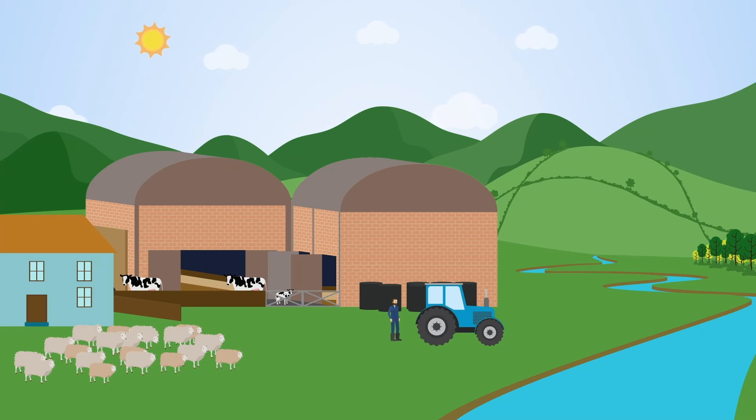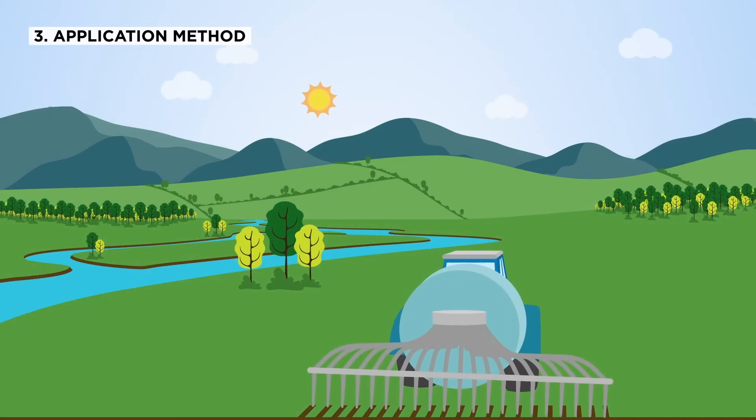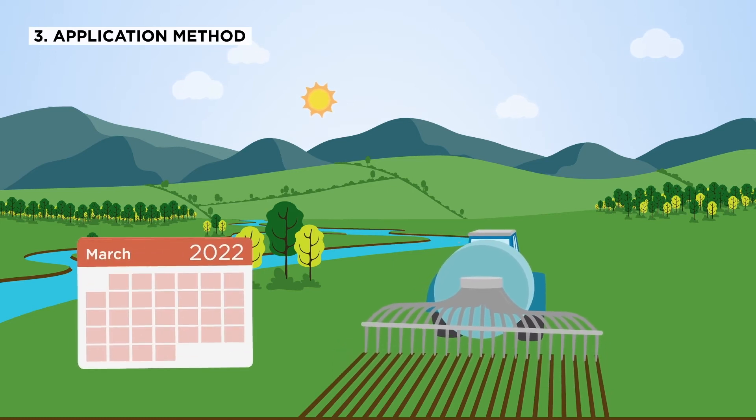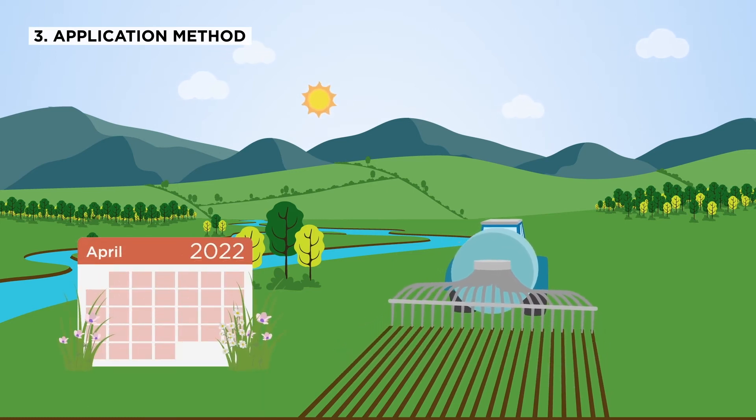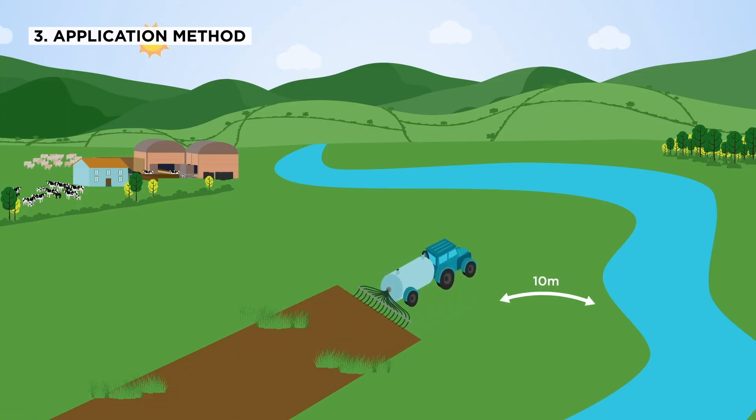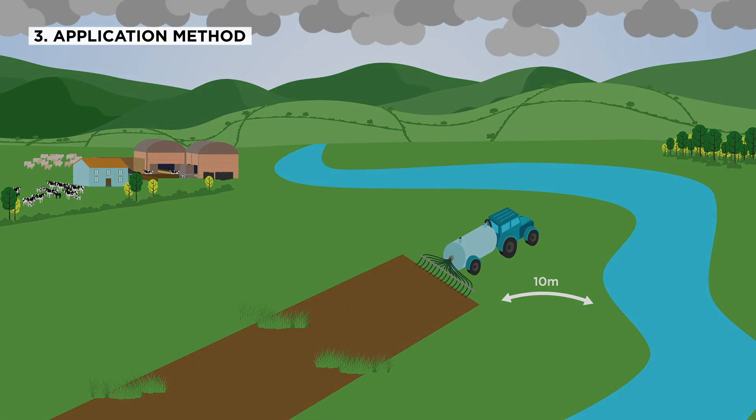Once farmers know the quantities and locations of nutrients for application, how can the method of adding nutrients to fields be improved? For slurry, a low trajectory trailing shoe should be used for application during March and April to boost spring growth. Do not apply slurry to saturated soils close to water sources or if heavy rain is forecast as nutrient runoff will occur.